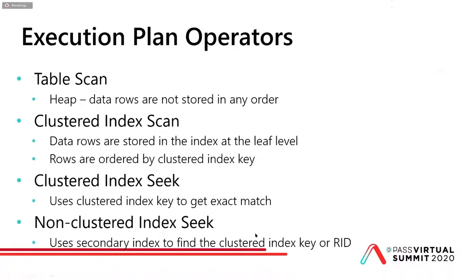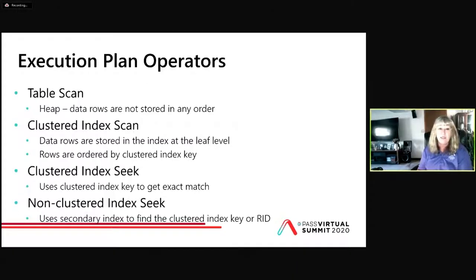There are quite a few operators in SQL Server. A table scan is a heap — a heap is basically rows not stored in any order on disk, so it has to do a table scan since there's no index. A clustered index scan is where the data rows are stored in the index at the leaf level, so it only has to go to the index to read the data — fast, but it's scanning all the data, so it's no better than a full table scan, though it is ordered. The rows are ordered by the clustered index key and you'd only have one clustered index on a table.